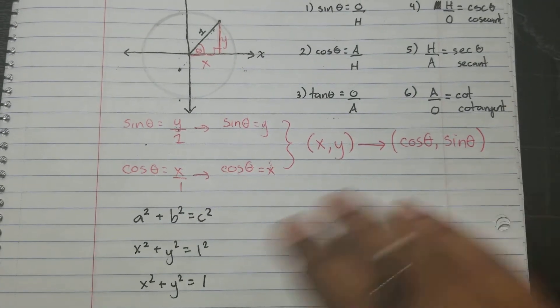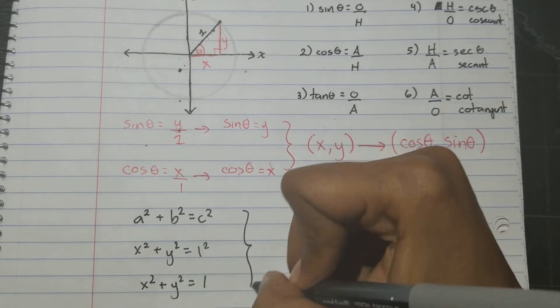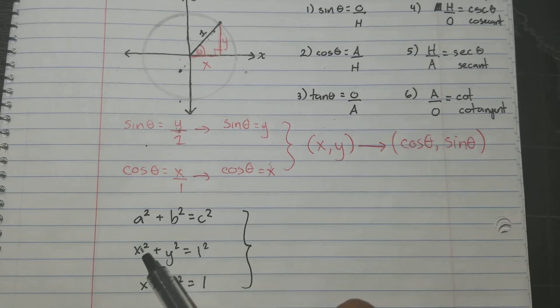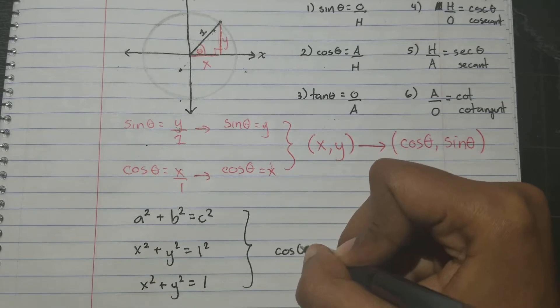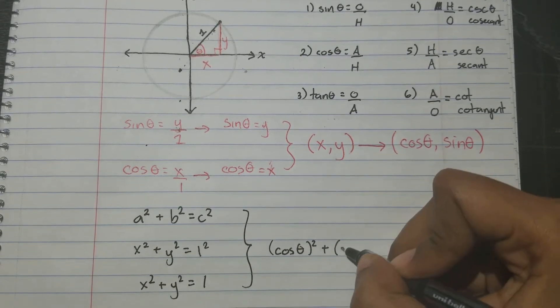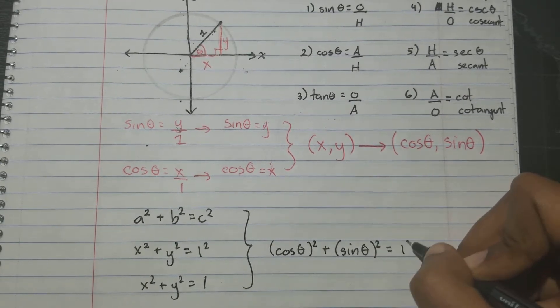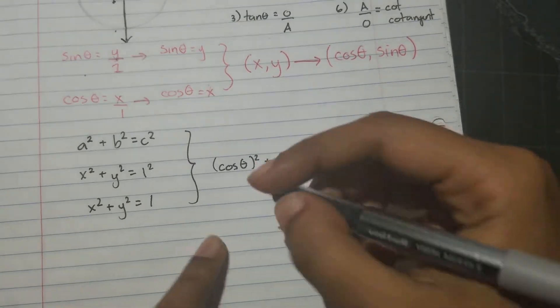But if we're trying to represent it using trigonometry, well, we have to use our equivalent values. So instead of x, it's going to be cosine. So cosine theta squared plus sine theta squared equals one squared. And when we simplify this, we get one of the trigonometric identities.